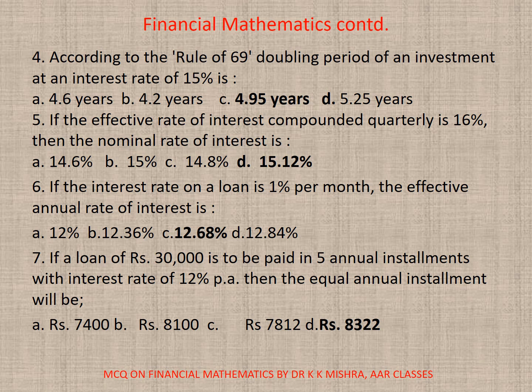Question 5: If the effective rate of interest compounded quarterly is 16%, then the nominal rate of interest will be — correct option is D — 15.12%.